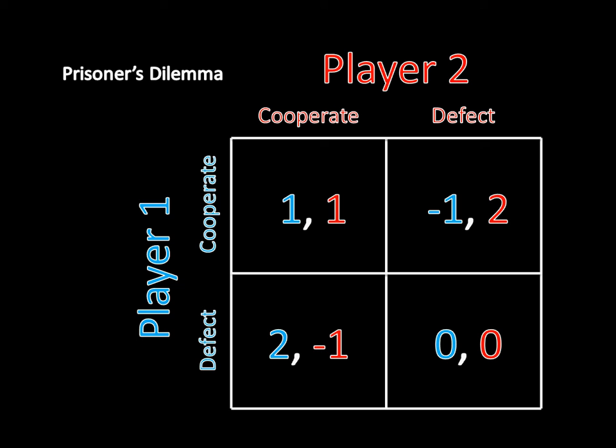If both players were to communicate before the game started and say, 'let's cooperate — it'll be better for both of us than if we both defect, because we could both get a one instead of both getting a zero,' well, neither one of those players has incentive to follow through with that. Neither one can credibly commit to continuing cooperation once they actually sit down and play the game.